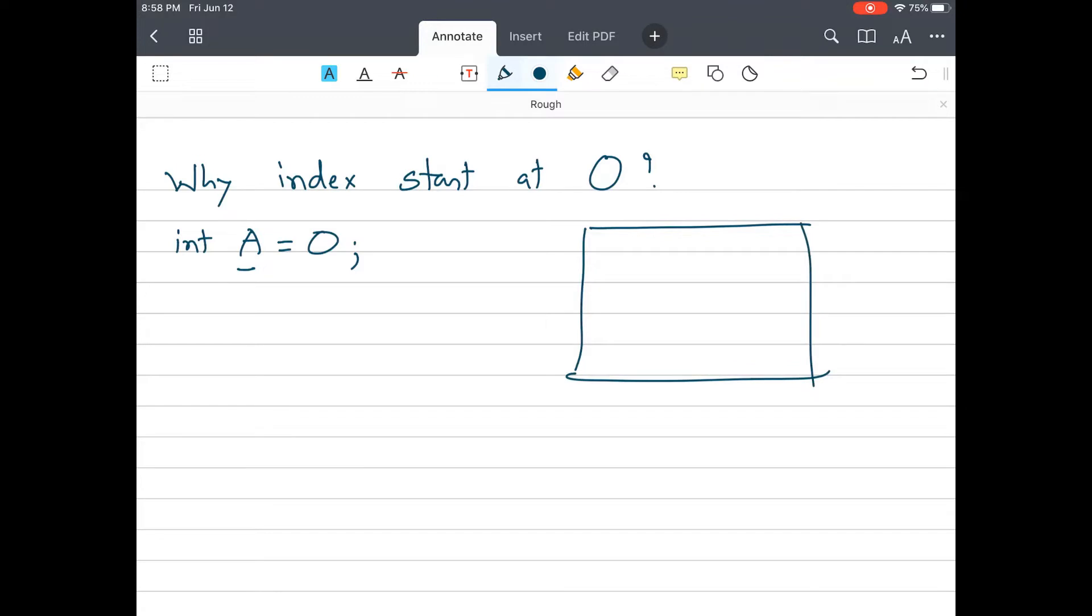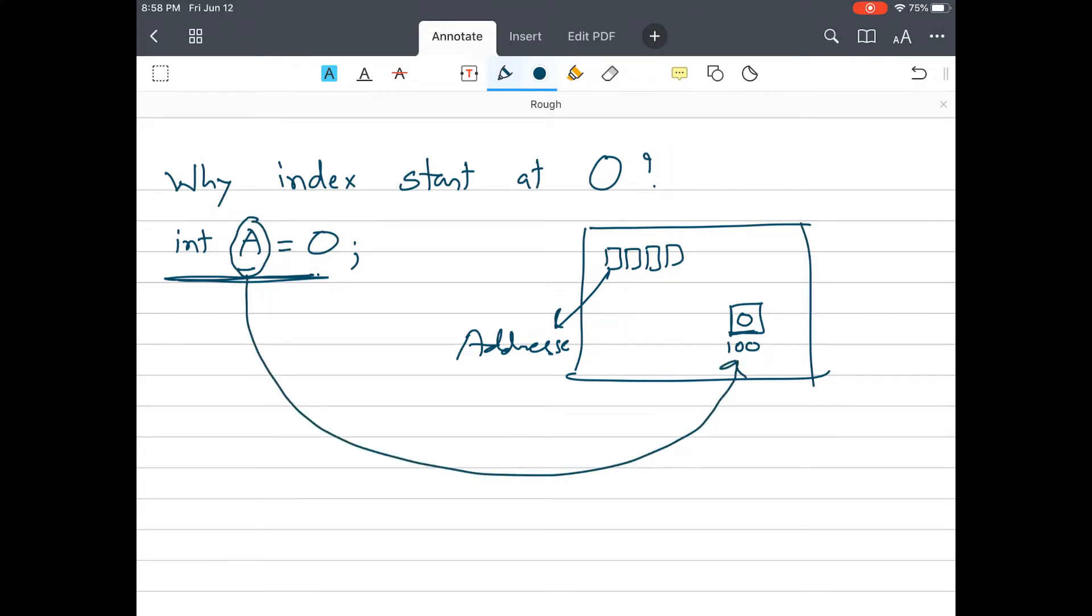If you have this line int A = 0, you know that A is a variable that stores zero. But what happens in the memory? Your computer has a big chunk of memory and inside it has small rectangles which have addresses, just like your home. What this line does is it saves zero inside, let's say, this block of memory which has address 100, and this A just points to that memory location.